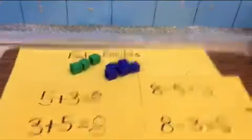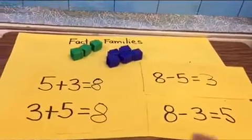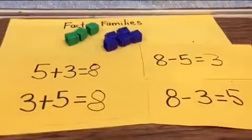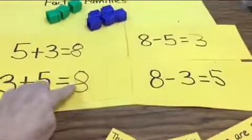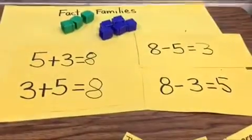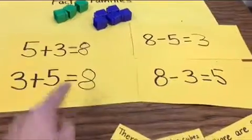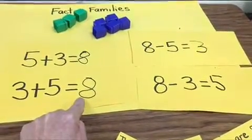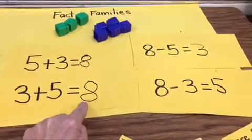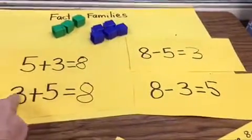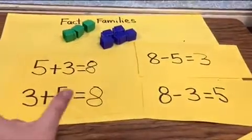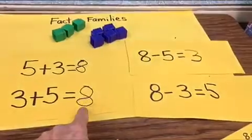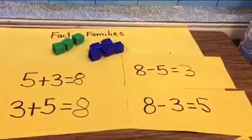And I can see here that my numbers for my fact family, they're so related. The largest number, the sum, always sits alone when I add. The largest number, also called the sum, sits alone when I add. And the other two numbers trade places because I can change the order of the addends but the sum stays the same. That's called the commutative property.